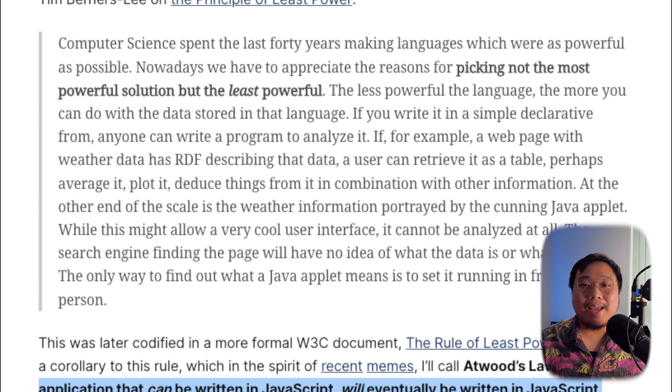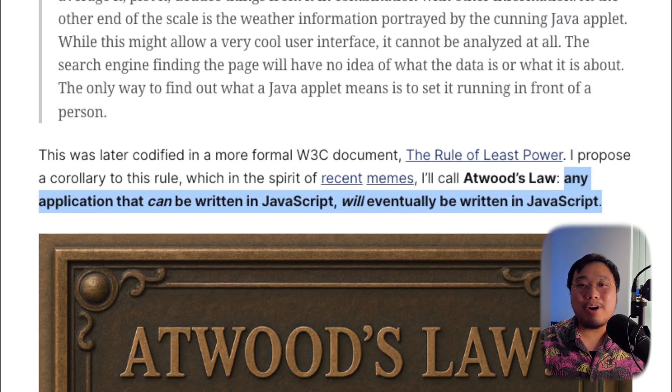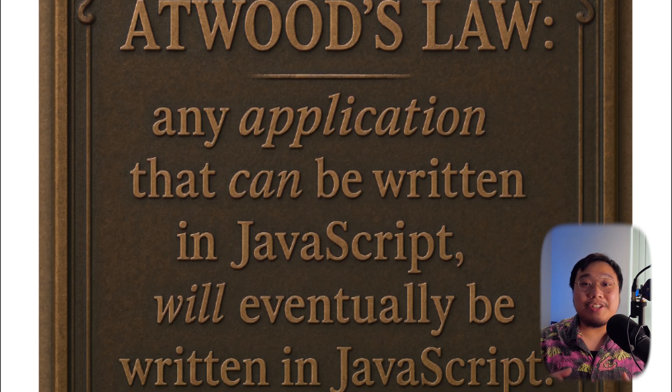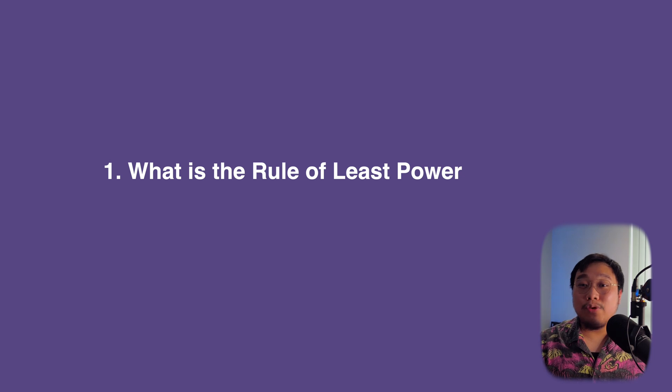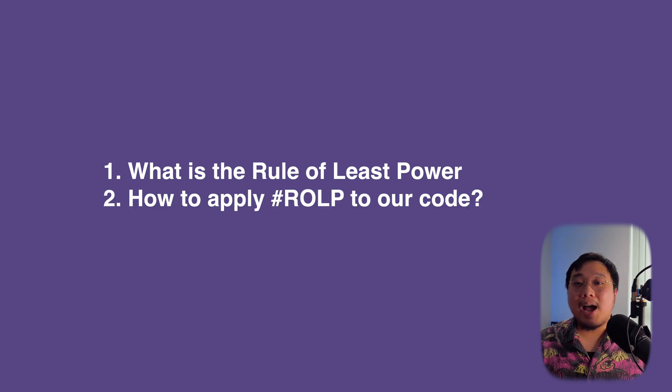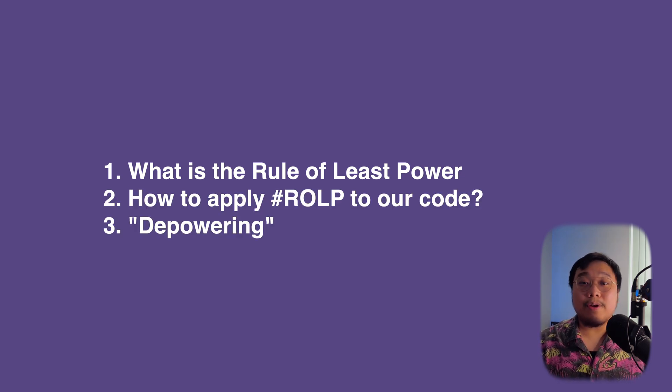But unlike Atwood's Law — a meme turned prophecy that says any application that could be written in JavaScript would be written in JavaScript — mine is a little bit more practical. Instead of calling it Jason's Law, I refer to it as hashtag ROPE. In this video, we'll be covering three things: first, what is the rule of least power; second, how we can apply it to our code; and third, a concept called depowering.